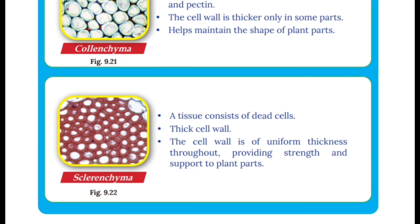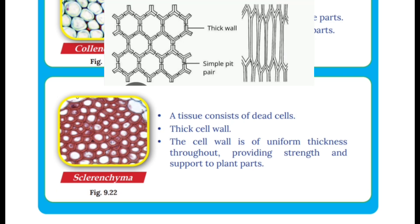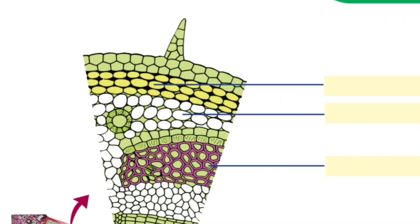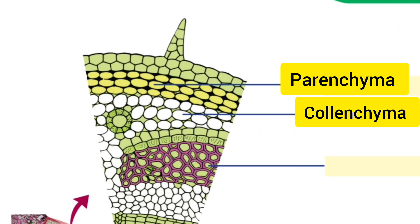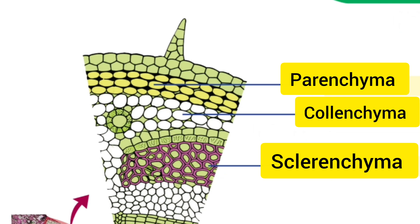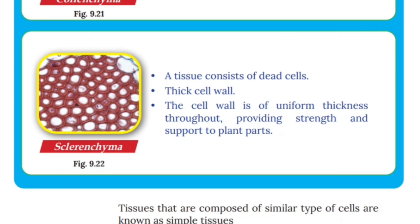Next, sclerenchyma. A tissue consisting of dead cells with thick cell walls. The cell wall is of uniform thickness throughout, providing strength and support to the plant. The three types are parenchyma, colenchyma, and sclerenchyma.